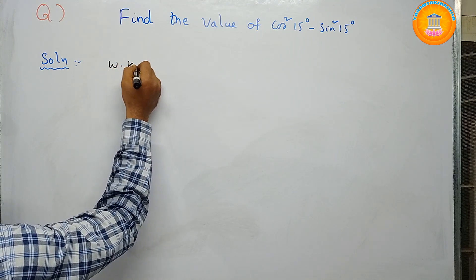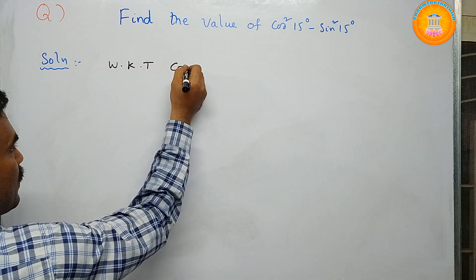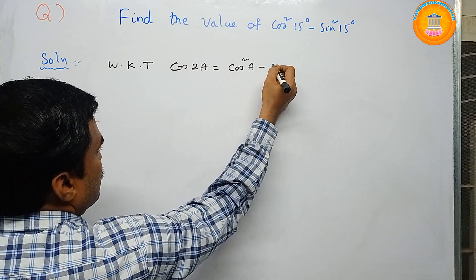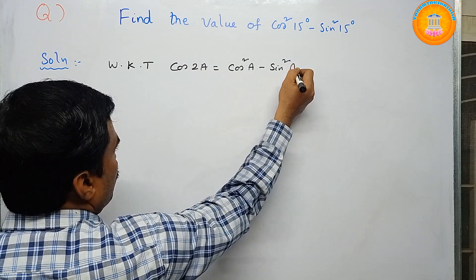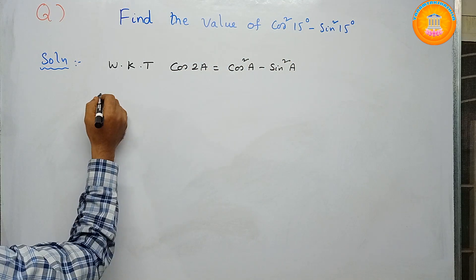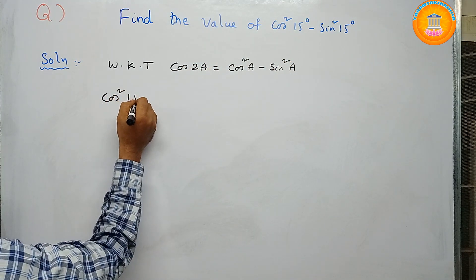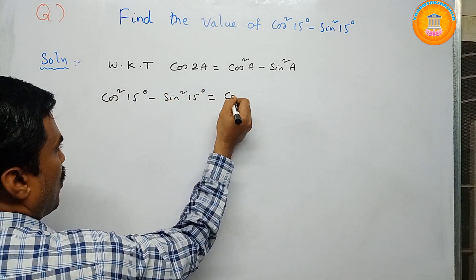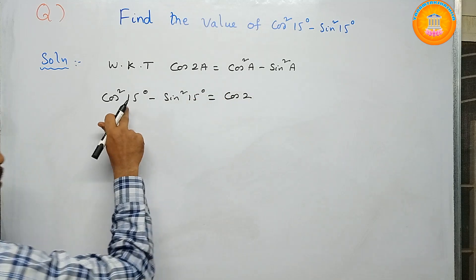We know that cos 2a = cos²a - sin²a, so we are using this result here. Now, the given problem cos²15° - sin²15° can be written as cos(2 × a), where a is 15 degrees.